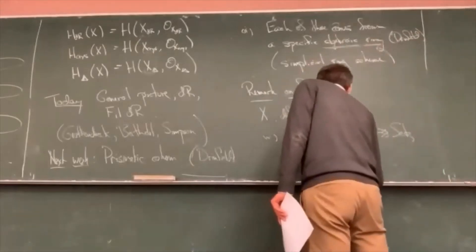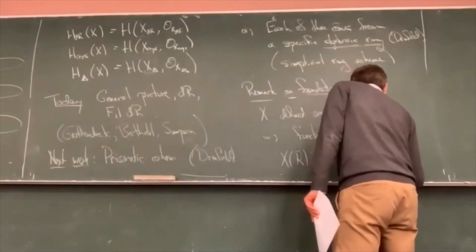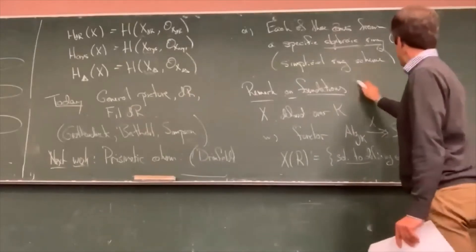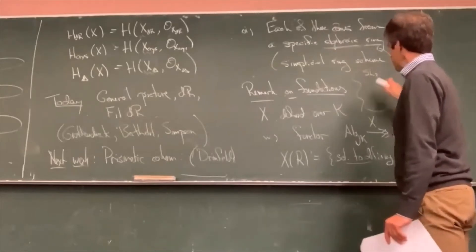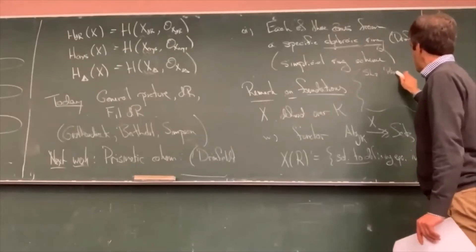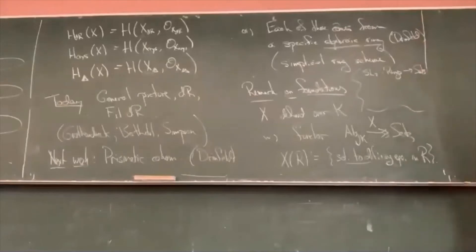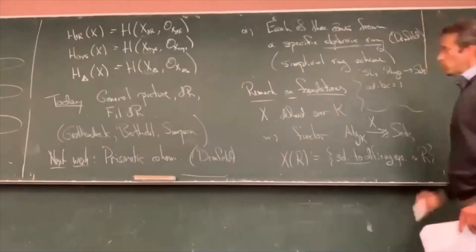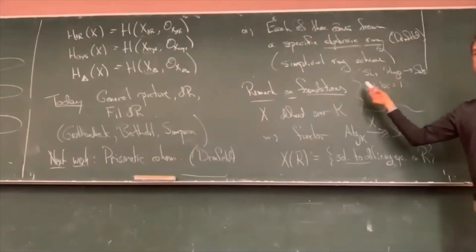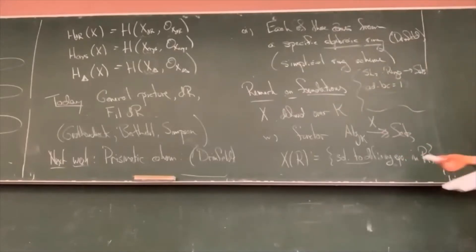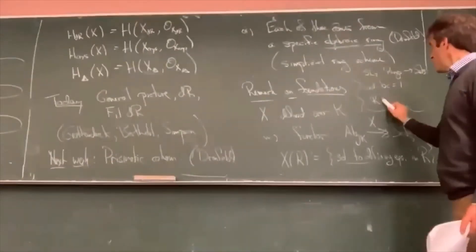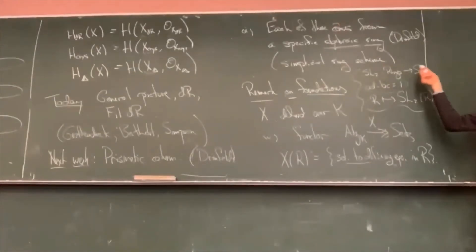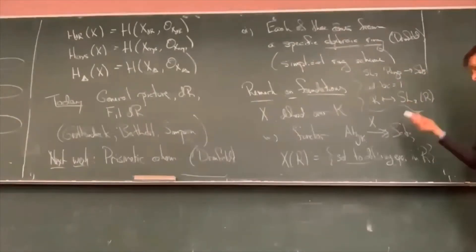A good example would be SL₂. SL₂ in the normal sense of the term is a functor from rings — in fact it goes to groups, but you can imagine it going to sets. It has one defining equation: AD minus BC equals 1. You input a ring, it outputs the set of all solutions to that equation in the ring in question. So it sends the ring R to SL₂(R). In this case, it's an algebraic group — it actually lands in groups, not just sets.